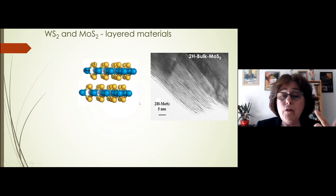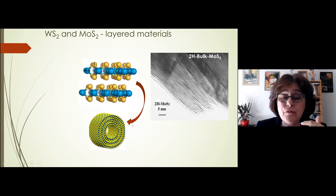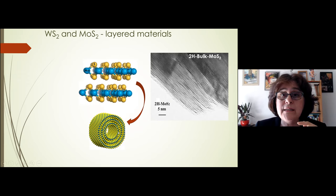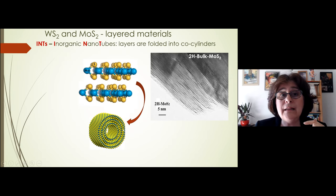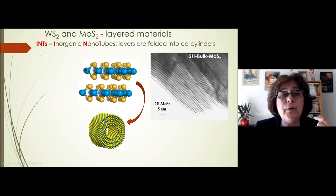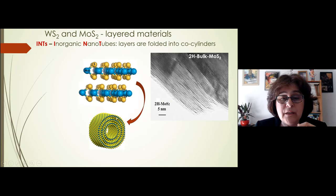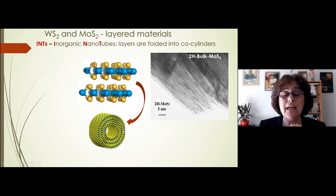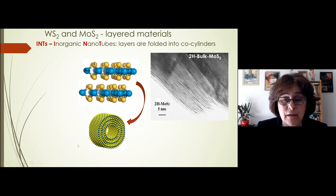The weak van der Waals forces between layers allow the material to be flexible and form nanotubes. When we bend the layers into cylinders, we create nanotubes. We call them inorganic nanotubes, using the abbreviation INT - I for inorganic and T for nanotubes. Each layer in inorganic nanotubes has a different diameter and different number of molecules, making the layers incommensurate but forming a stable, well-defined structure.